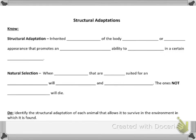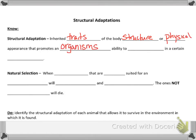Alright guys, this is the next part of our adaptation series: Structural Adaptations. Structural adaptations are inherited traits of the body structure or physical appearance that promote an organism's ability to survive in certain environments. They live in a certain place and then their body over time has adapted and made them more efficient in living in that area, and that happened genetically through inherited traits.